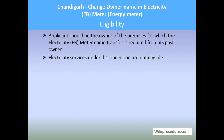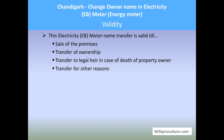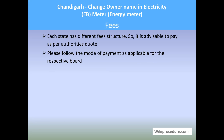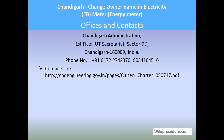Eligibility: The applicant should be the owner of the premises for which the electricity meter name transfer is required. Electricity services under disconnection are not eligible for this procedure. Validity: The electricity meter name transfer is valid until the sale of the premises, or until transfer of ownership to a legal heir in case of death of the property owner, or until transfer for other reasons. Fees: Each state has different fee structures, so it is advisable to pay as per the authorities' requirement and follow the mode of payment as per the state government's norms. Processing time: maximum seven working days.